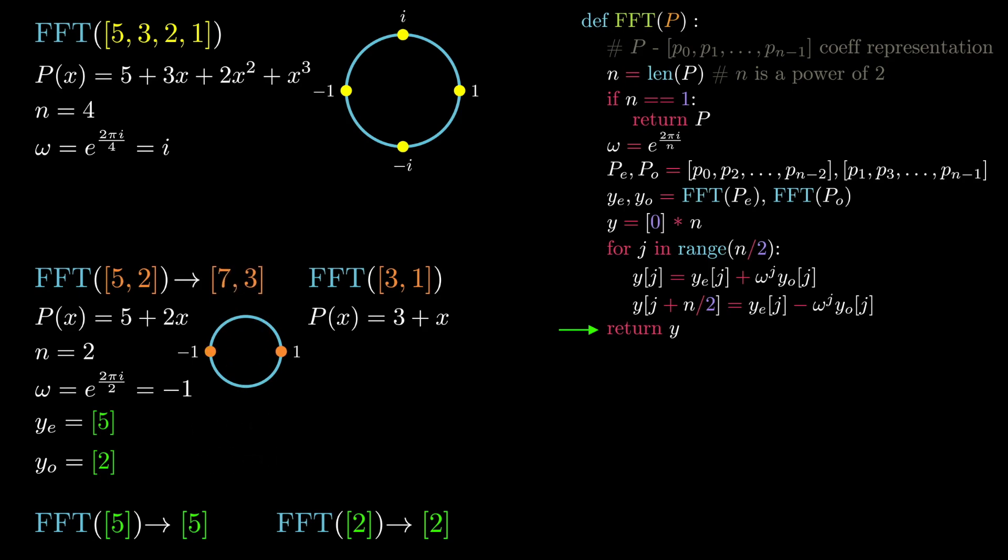We now return this value. After finishing the recursive call on the even degree terms, we proceed to do the same process on the recursive call on the odd degree terms. The logic is exactly the same, but with a different input, so I will let you just follow along with the animations at your own pace.